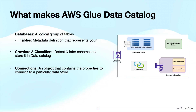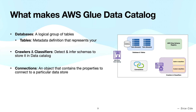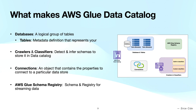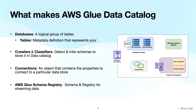Another component is connections — a connection is the data catalog object which contains the connection configuration needed to connect to a particular data store. Finally, the fourth component is AWS Glue Schema Registry, a feature that allows you to centrally discover, control, and evolve data stream schemas. These components together make the metadata repository possible, which is known as AWS Glue Data Catalog.